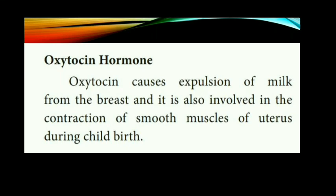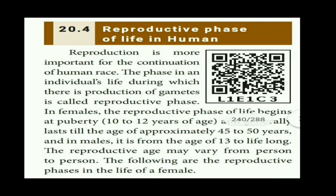Next, let's see the reproductive phase of life in humans. The reproductive phase refers to the time period during which individuals are capable of reproducing. Gamete production takes place only during this reproductive phase. In females, the reproductive phase begins at puberty — around 10 to 12 years of age — and generally lasts until approximately 45 to 50 years. But in males, it is from the age of 13 and is lifelong.